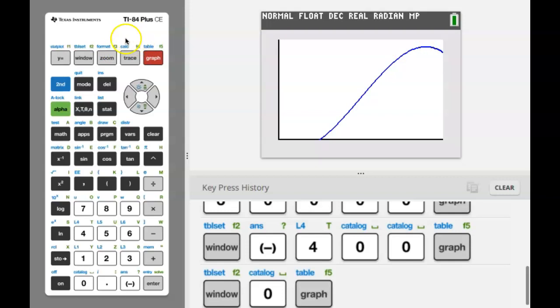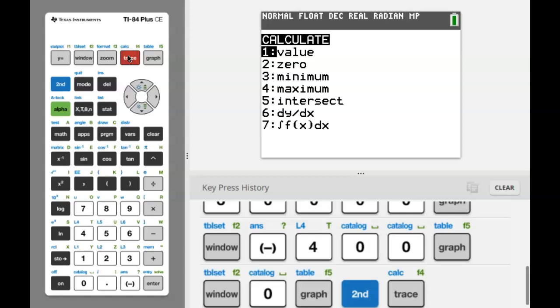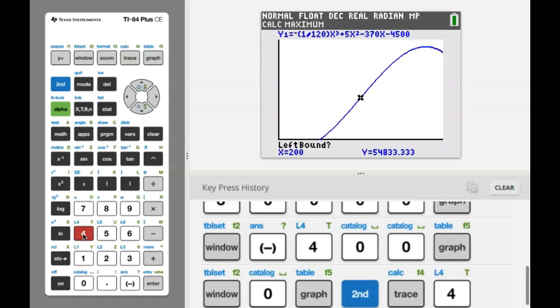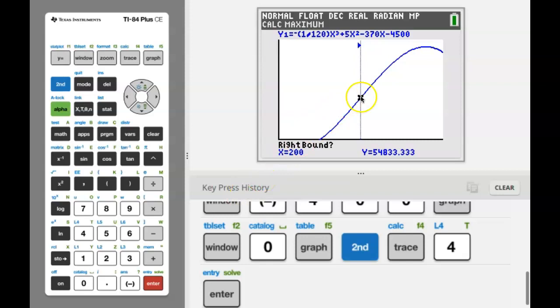So to calculate a maximum or a minimum, you're going to use the calc menu, which is above the trace key. So let's go second, calc. This time we're going to choose number four, which is maximum. And you're going to be prompted for the left bound, which means you see this little cursor that's blinking. I often call it the bug. We want to make sure that this bug is clearly to the left of the maximum that we're trying to calculate. So right now where my bug is, it is definitely to the left of the maximum that I need. So I can just press enter. Now if your bug was not to the left, then you would use your left and right arrow keys and move it until it was definitely to the left of the maximum.